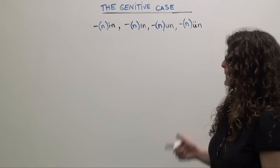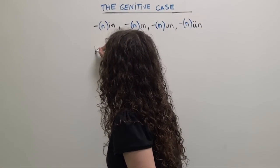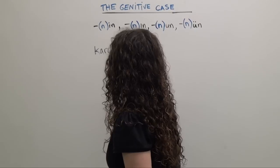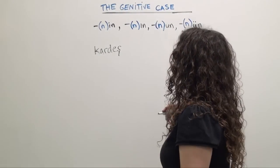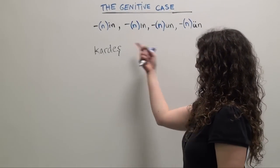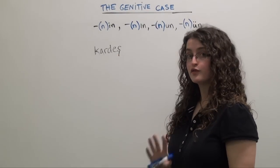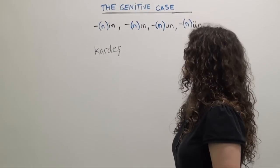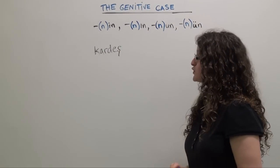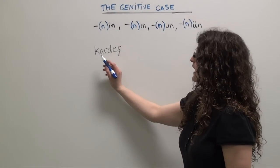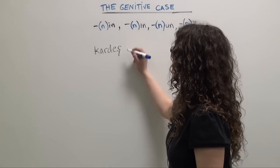Let's look at an example. Let's take the Turkish word for sibling: kardeş. If you want to say 'of the sibling,' you're going to choose the version of the genitive case ending that corresponds best with kardeş according to the rules of four-way vowel harmony. Our four choices are: in, ün, un, and ın. The rules of four-way vowel harmony tell us we choose 'in' for kardeş, so 'of the sibling' is kardeşin.